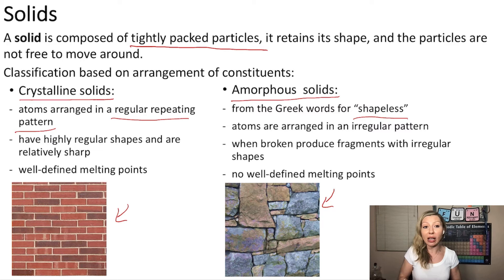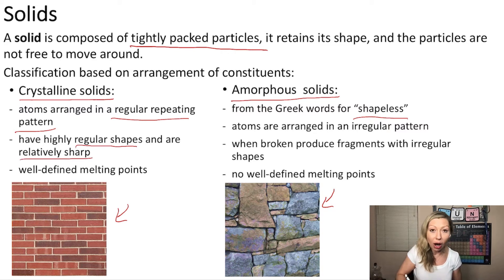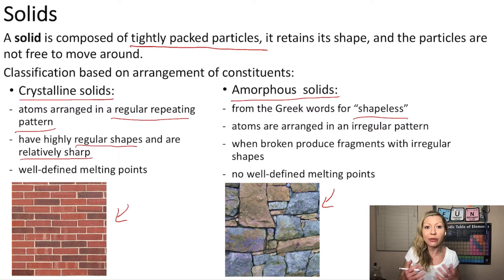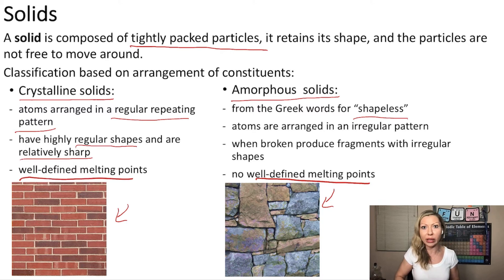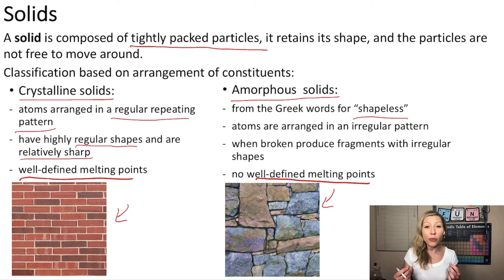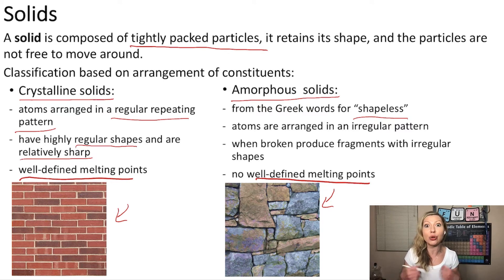In crystalline solids we are going to have highly regular shapes and they are going to be relatively sharp. Amorphous solids when broken produce fragments with very irregular shapes, and interestingly amorphous solids have no well-defined melting points, but crystalline solids have well-defined melting points. This is because in crystalline solids all bond energies are the same, but in amorphous solids the atoms and molecules are all over the place, so the bonds have different strengths and it takes different amounts of energy to melt them — so they melt in a temperature range.